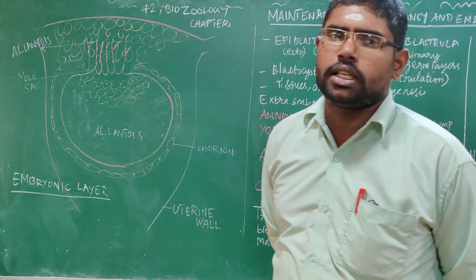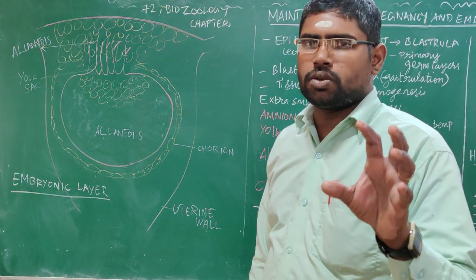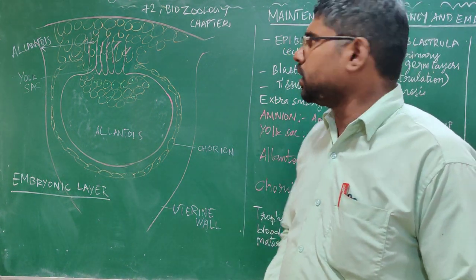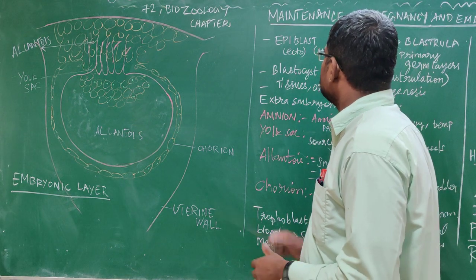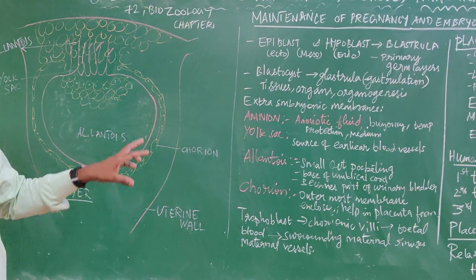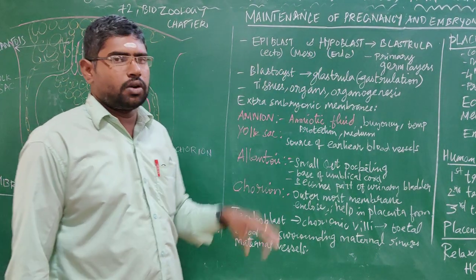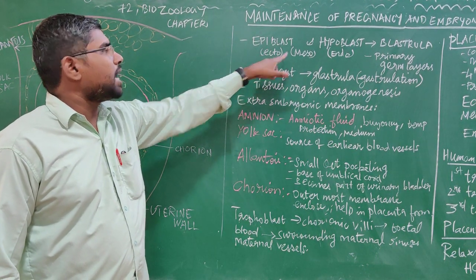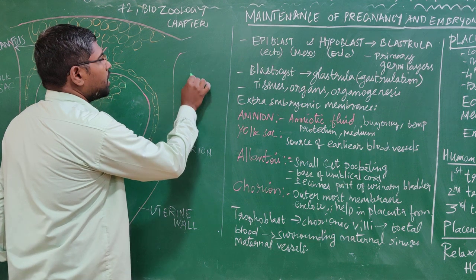A blastocyst is the first structure. We see the development of the fetus. Now we see the epiblast. There are two layers of the blastocyst: one cell layer is the epiblast and the other is the hypoblast.